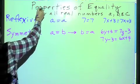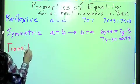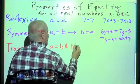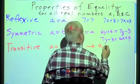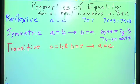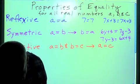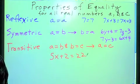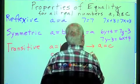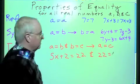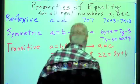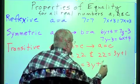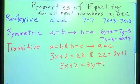The next one is the transitive property. It says this: If A equals B and B equals C, then A equals C. A simple model example of that would be this: 5x plus 2 equals 22, and 22 equals 3y plus 1. Then we can say 5x plus 2 equals 3y plus 1. That's what that says.